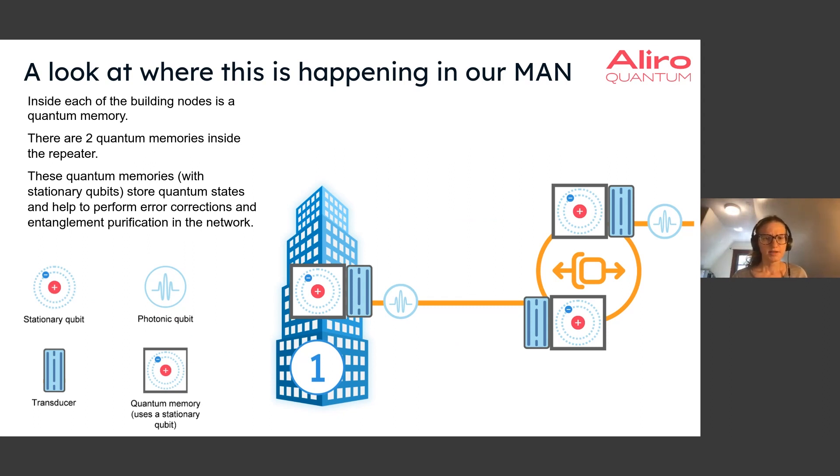Let's return to our metro area network example and kind of flesh out what is happening in our example. In particular, zooming back into this connection between building one and the repeater. At building one, we have a quantum memory, which will consist of one or more stationary qubits, and a transducer as well to convert the photons that are emitted from the quantum memory to a frequency which is well suited for the fibers that will go over long distances.